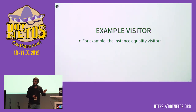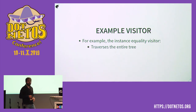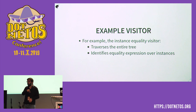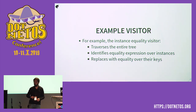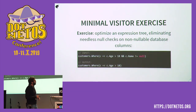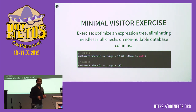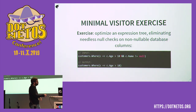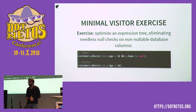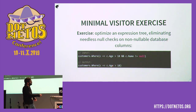Each visitor is a component that traverses the expression tree and does exactly one thing — one of these manipulation operations. For example, the instance equality visitor has a very simple job: it traverses the entire tree, identifies places where we're doing equality between instances, and when it finds those, replaces those expressions with expressions doing equality over their keys. That's the one-job description for one visitor in our pipeline.